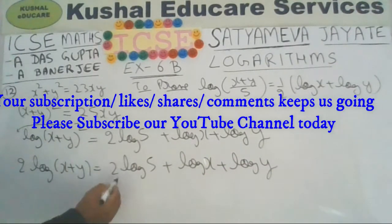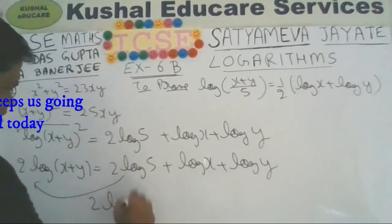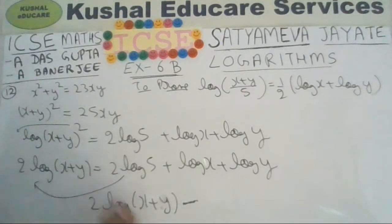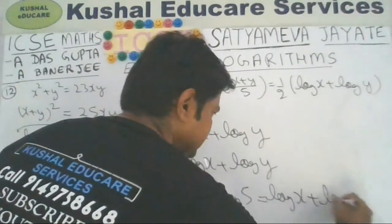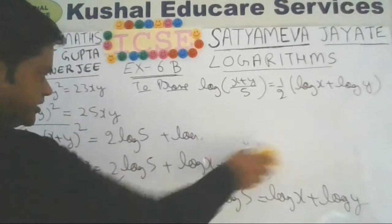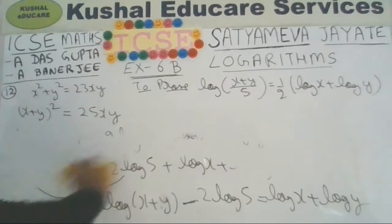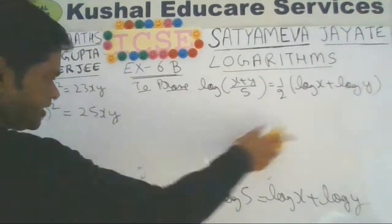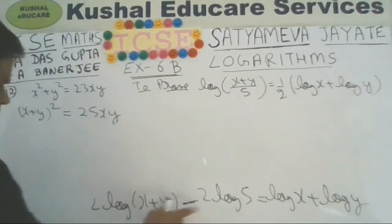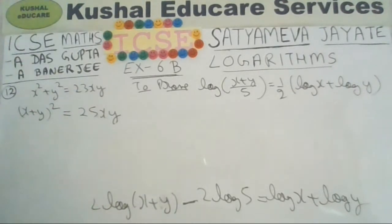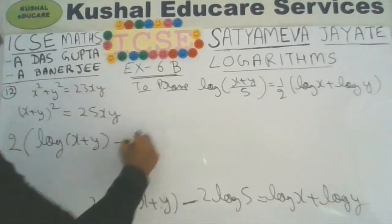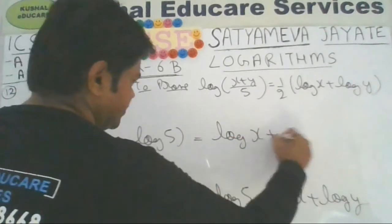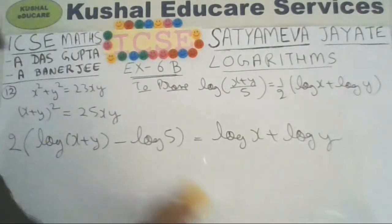Transfer 2 times log 5 from right to left: 2 times log of x plus y minus 2 times log 5 equals log x plus log y. Take 2 as a common factor with a bracket: 2 times of log of x plus y minus log 5, equals log x plus log y. As per laws of logarithm, subtraction means division in the original expression.